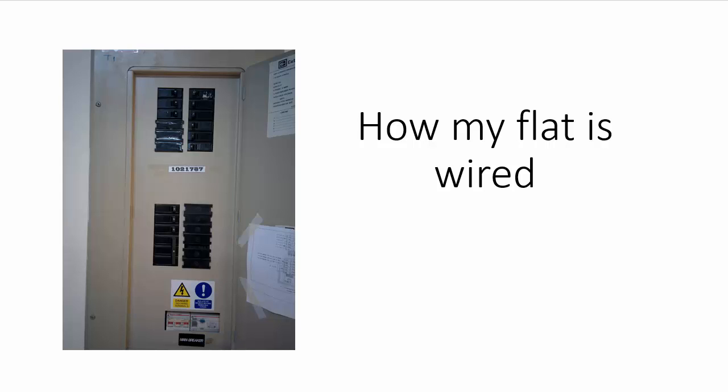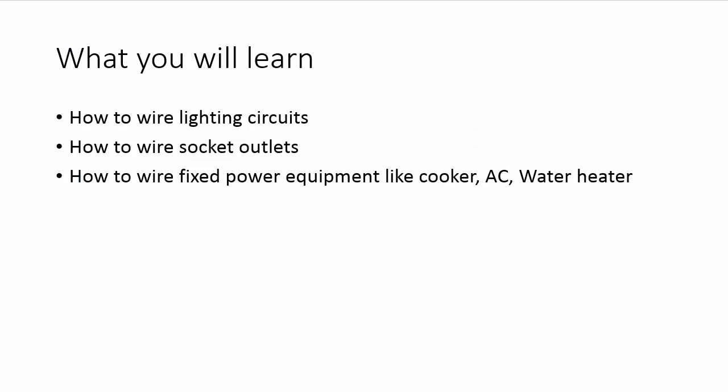Good morning. In this video I will be describing how my two-bedroom flat is wired. You will learn here how to wire lighting circuits, how to wire socket outlets and how to wire fixed power equipment like cooker, AC and water heater. These are the three types of circuits that you will find in a typical house or flat.